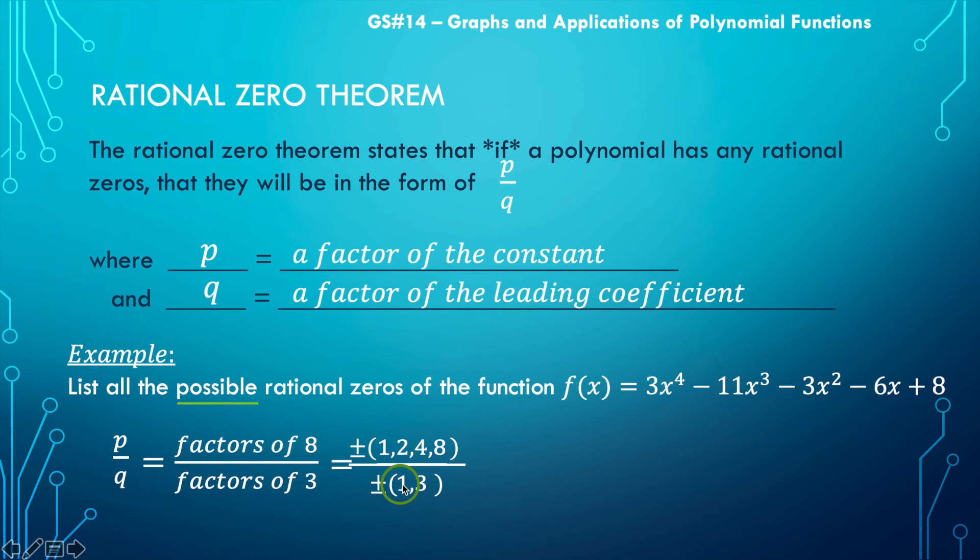So one over one, two over one, four over one, and eight over one. And we're going to list those as positive and negative. So plus or minus one, plus or minus two, plus or minus four, and plus or minus eight.